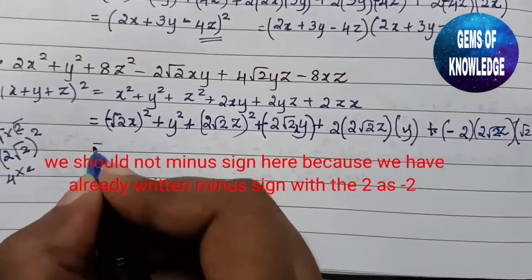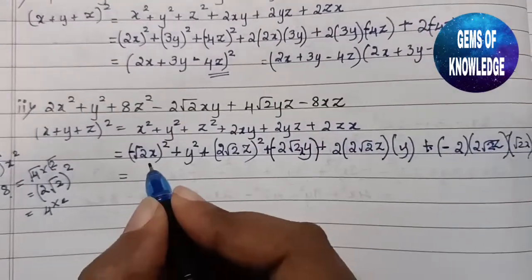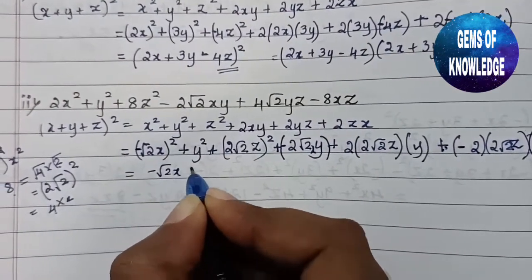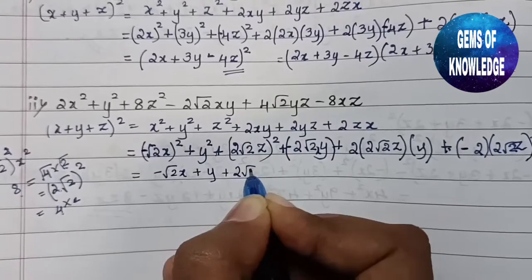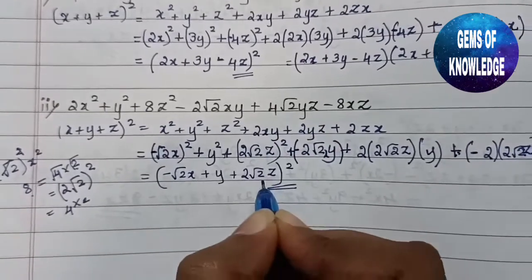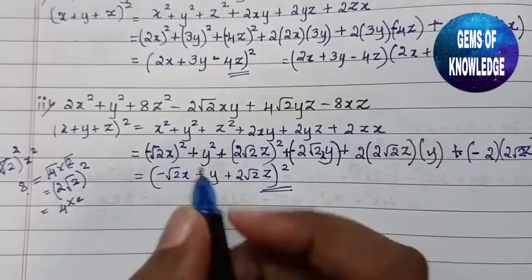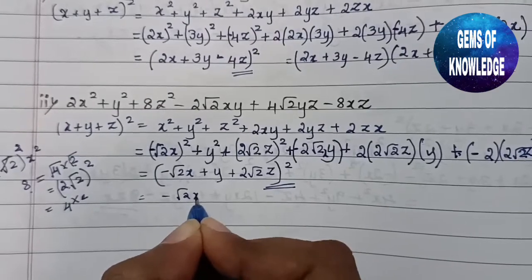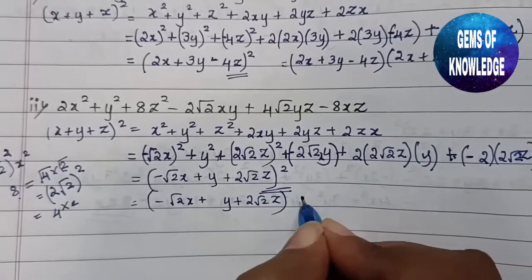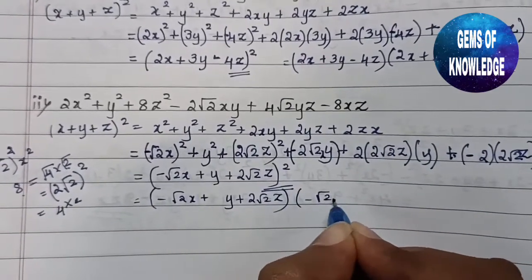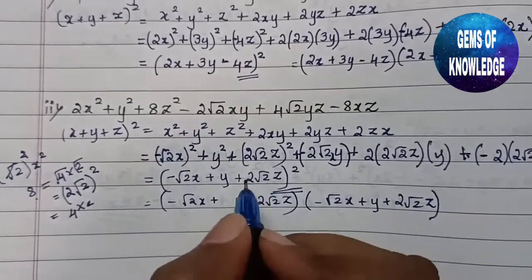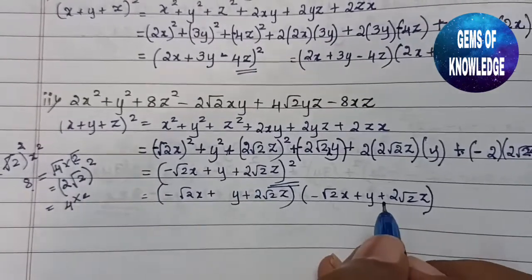So the final factorized form is (−√2x + y + 2√2z)². You can leave the answer in this form, or write it expanded as (−√2x + y + 2√2z)(−√2x + y + 2√2z). Either form is acceptable as the final answer.